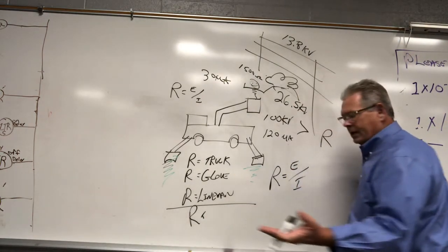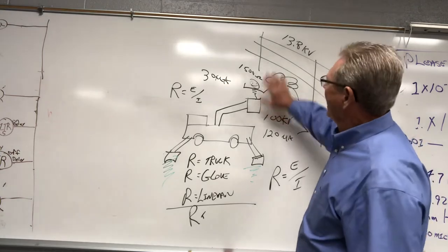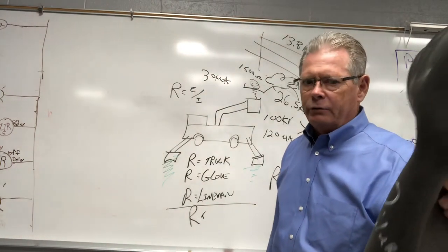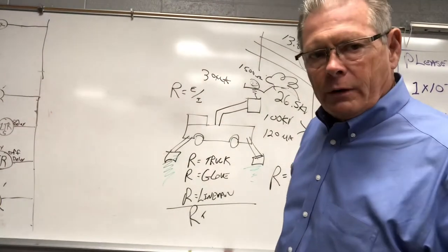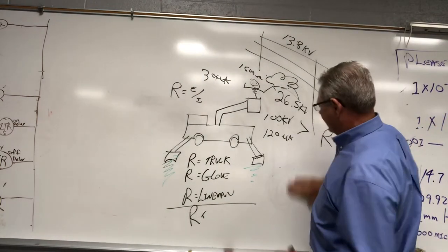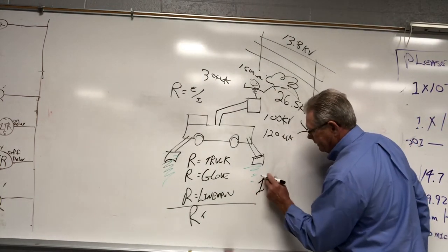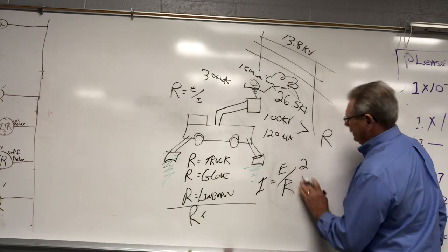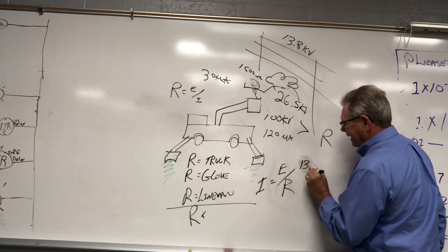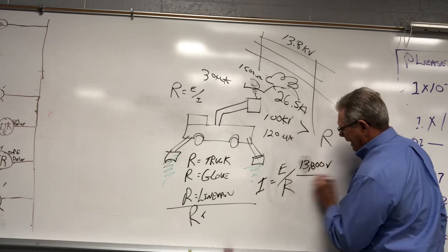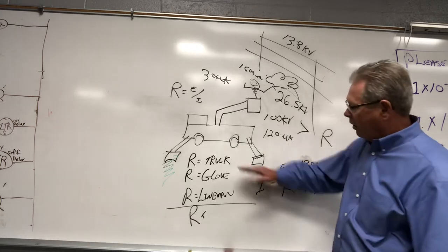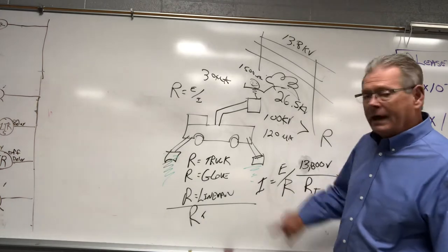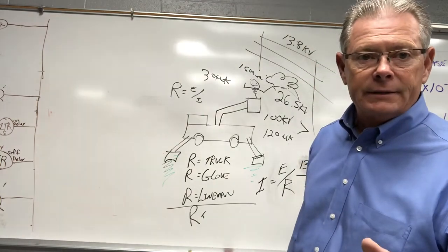Then if we take Ohm's law again, and now we're wondering when the lineman touches that line with their gloves on, with the high potted boom, does any current flow? Well then, if we do Ohm's law, I equals E divided by R. If E is 13,800 volts and R is RT, which is resistance of the truck, resistance of the glove, resistance of the lineman, we can do that math. We're going to get some current.